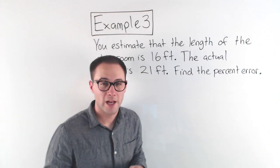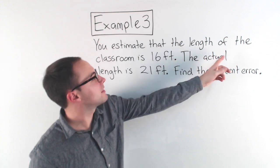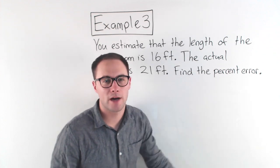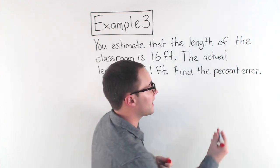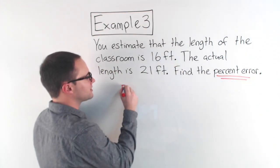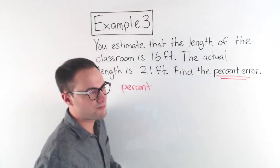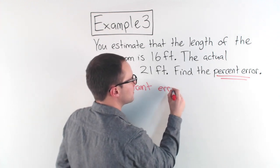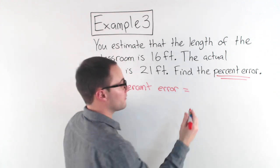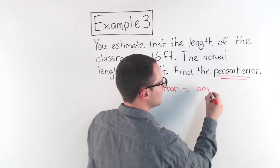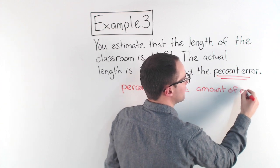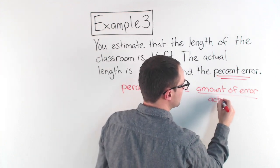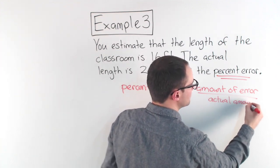Let's try one more example. You estimate that the length of the classroom is 16 feet; the actual length is 21 feet. Find the percent error. We haven't talked about percent error yet. Percent error is basically what percent you are off by on your estimates. The formula is: amount of error divided by the actual amount, expressed as a percent.